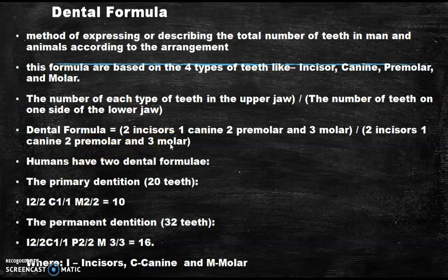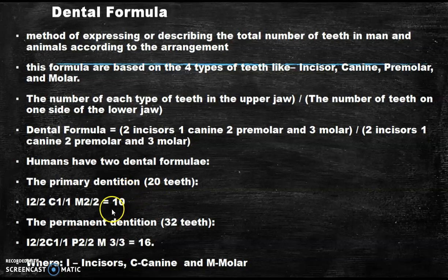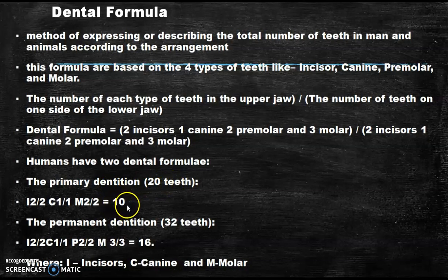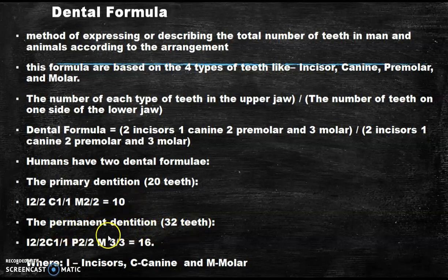In humans we have two dental formulas — one for primary dentition and one for permanent dentition. Primary dentition is for 20 teeth and the dental formula equals 10. For permanent dentition, we have 32 teeth, so the dental formula is 16.